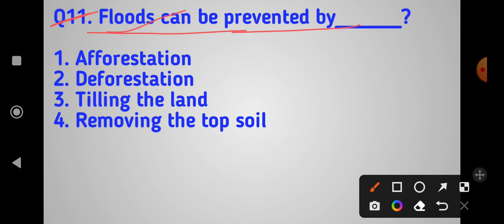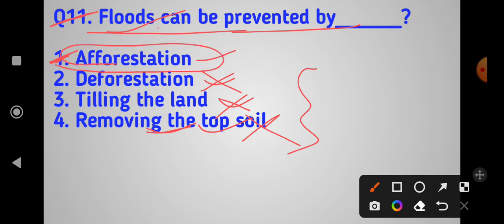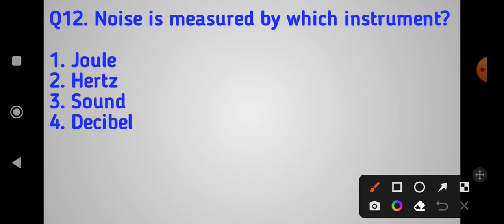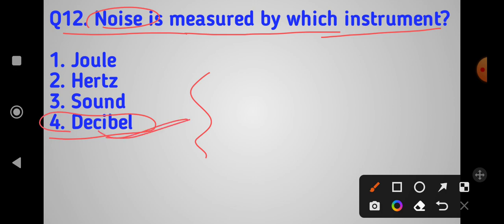Floods can be prevented by afforestation. Deforestation causes flooding, while afforestation prevents it. Option number one is correct - afforestation. Next question: noise is measured by which instrument? The answer is decibel. Decibel measures noise pollution.